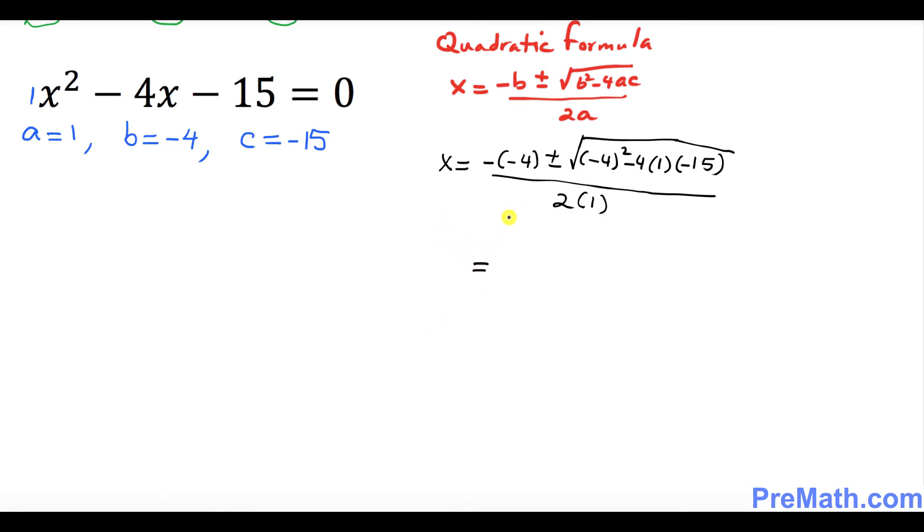So let's go ahead and simplify it more. It's going to be negative and negative become positive 4 plus minus. This is going to be 16 plus this is going to be positive 60 divided by 2. So this is going to be 4 plus minus square root of 76 divided by 2.